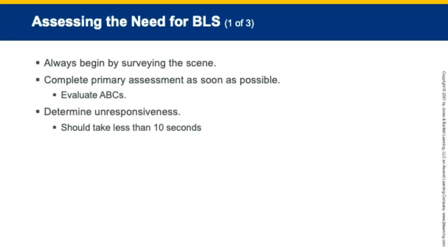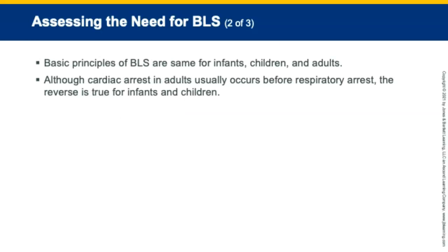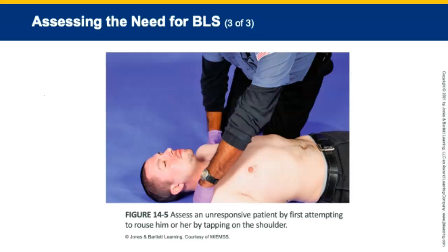Assessing the need for basic life support always begins by surveying the scene. Complete the primary assessment as soon as possible to evaluate the patient's ABCs. The first step is determining responsiveness—a responsive patient does not need CPR, while an unresponsive patient may or may not. This step should take no more than 10 seconds. The basic principles of BLS are the same for infants, children, and adults, although cardiac arrest in adults usually occurs before respiratory arrest, while in infants and children it is usually respiratory arrest that causes cardiac arrest.